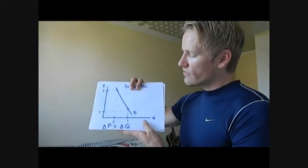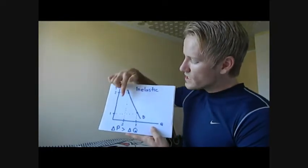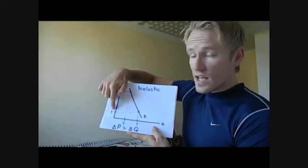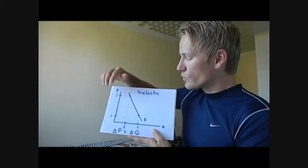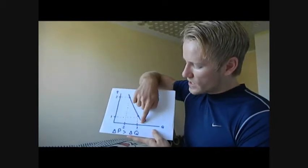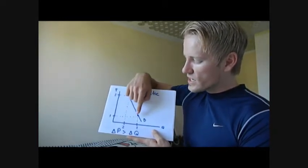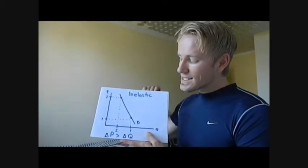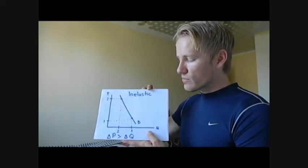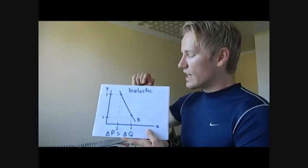Now let's look at the flip side — a good that has an inelastic curve. When gas prices go up, people have to commute to work and still buy gas. Because gas has no close substitute, the demand for gas is inelastic. Here we have an inelastic curve. When gas is at $1, this is the quantity demanded. As soon as gas jumps up to $2, we see that the percentage change in quantity demanded is less than the change in price. This is why we have an inelastic curve.